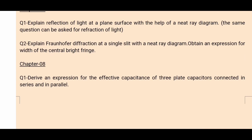The next is chapter number 8: derive an expression for the effective capacitance of a three-plate capacitor connected in series and in parallel. In electrostatics, maximum chances are that questions are asked from the capacitor part. The answer is on page 204 to 205, and this was also asked in this year's question paper. You derive: 1/Cs = 1/C1 + 1/C2 + 1/C3 for series, and Cp = C1 + C2 + C3 for parallel.